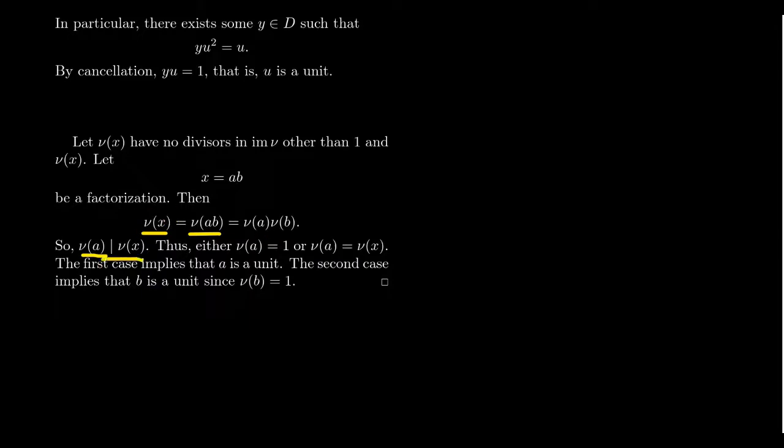In particular, the norm of A divides the norm of X, for which by our hypothesis right here, that would imply that the norm of A is equal to 1, in which case that would imply that A is a unit. The other possibility is that the norm of A equals the norm of X. In that situation, you would have to have the norm of B is equal to 1, which would then imply that it is a unit.